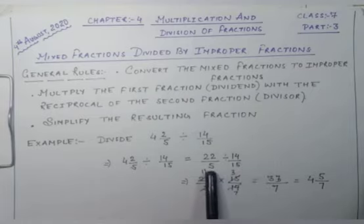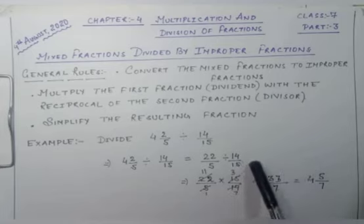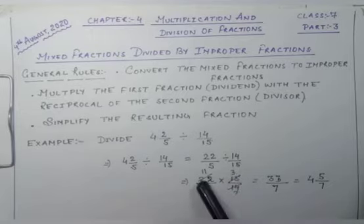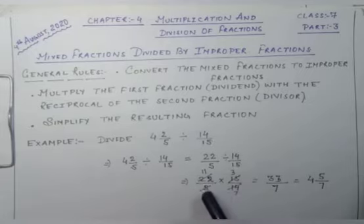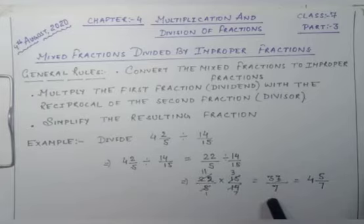So here, 22/5 divided by 14/15. When I convert this division sign into a multiplication sign, the divisor becomes its reciprocal. After taking the reciprocal, we simplify: 22 to 11, 11 to 11, 14 to 7, 5 remains 5, and 15 to 3. So it cannot be simplified further.